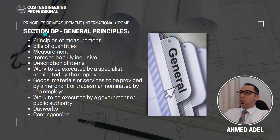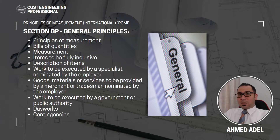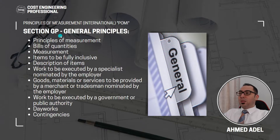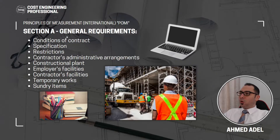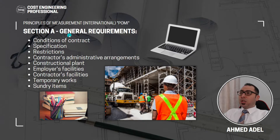Section GP is the first section in the BOQ. Before anyone starts to price the BOQ, they will read the GP to understand how the items and the next sections are measured. After that they go and price. It is very important to have this section at the beginning of our POMI BOQ.